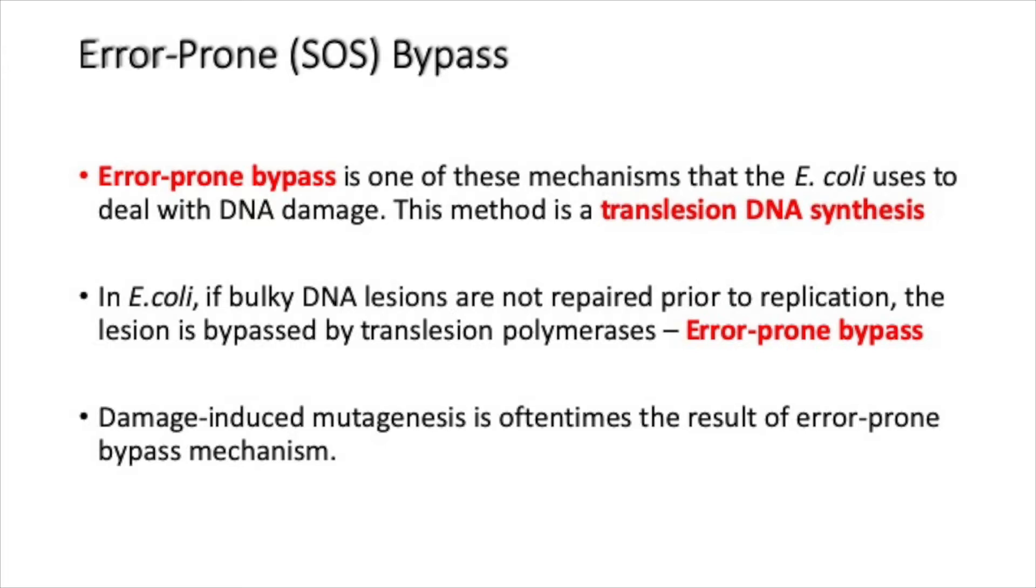In E. coli, if bulky DNA lesions are not repaired prior to replication, the lesion is bypassed by translesion polymerases. This process is called error-prone bypass. Damage-induced mutagenesis is oftentimes the result of error-prone bypass mechanism.